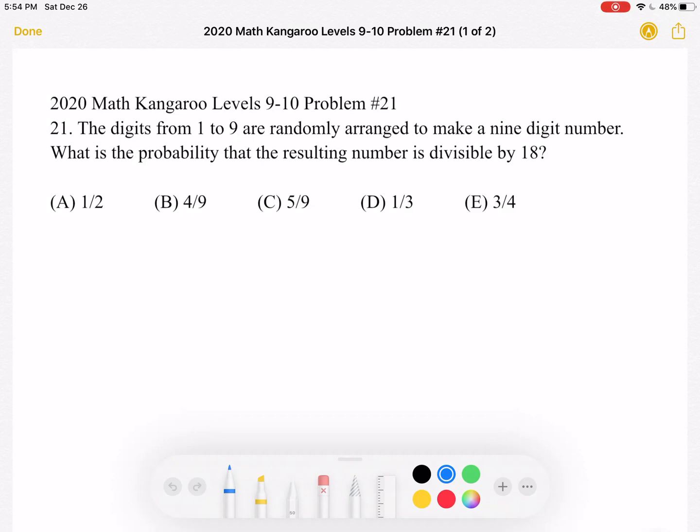A: one-half, B: four ninths, C: five ninths, D: one-third, or E: three-fourths.